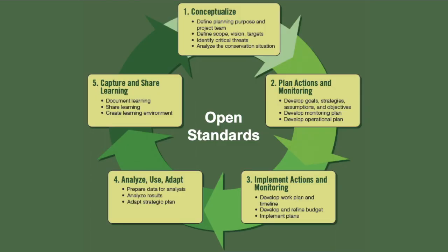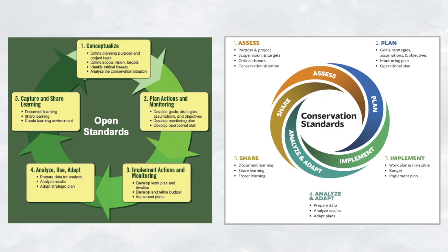Here's the previous Open Standards cycle — you can see it's a bit more convoluted with quite a bit of detail. And here are the two cycles side by side: the old Open Standards and the new Conservation Standards one. The look and feel are quite different in the new one. Comparing them, you can see some content changes. In general, the step names are simplified down to one word, the sub-steps are trimmed back, and language-wise, the only major change is that step one is now called Assess — a term that is simpler and sounds less jargony than conceptualize.